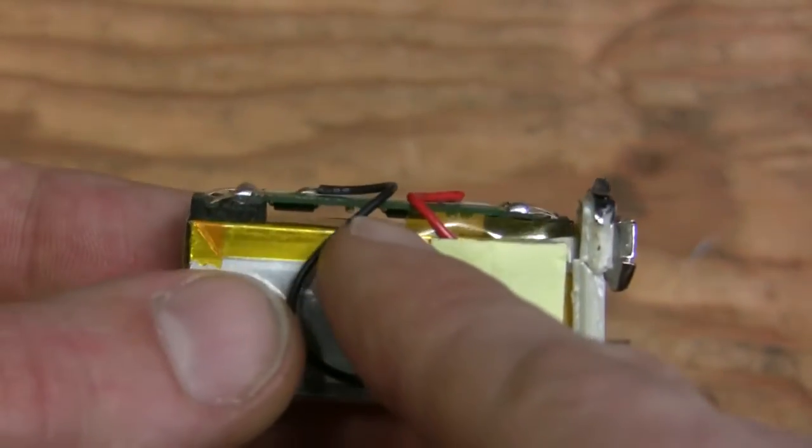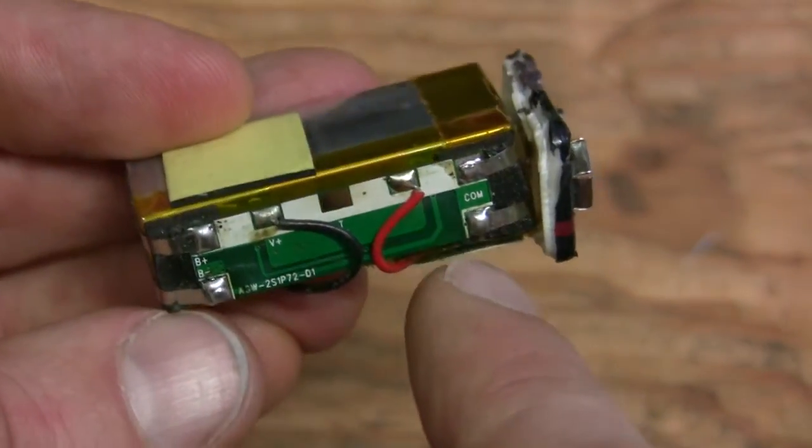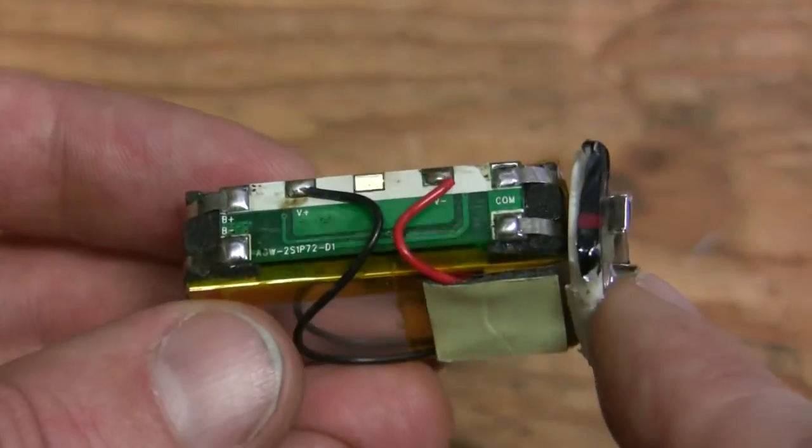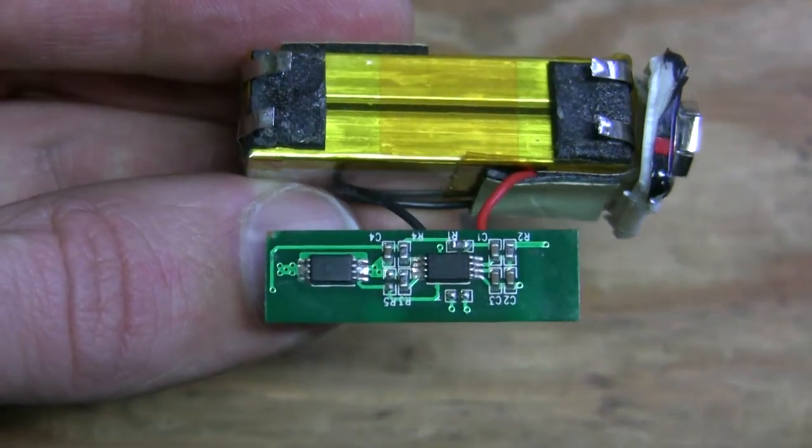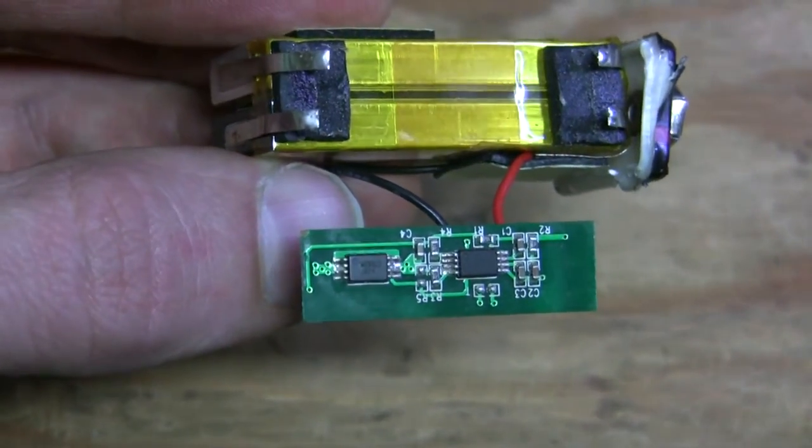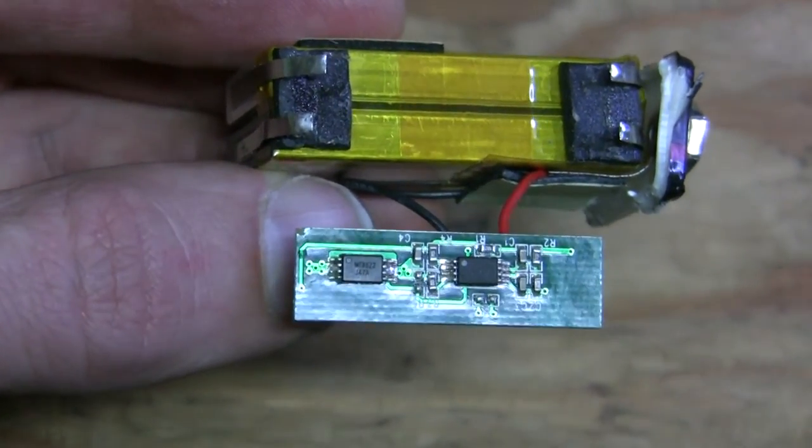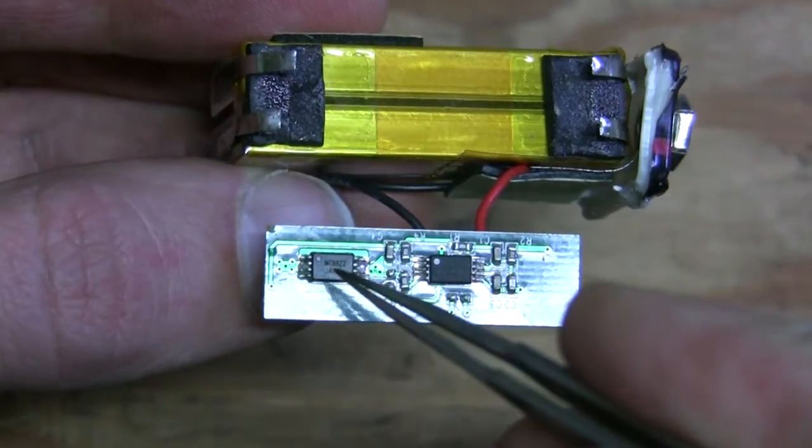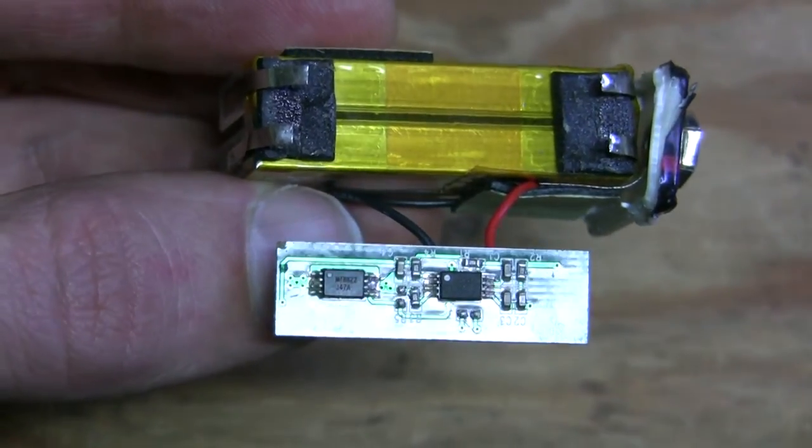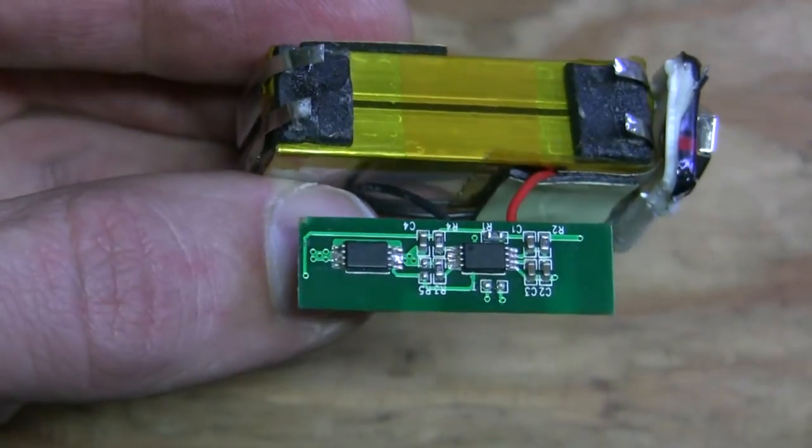Let's have a look. All the components are on the other side of the board. I need to desolder those four tabs to lift the board and have a look on the other side. Here is the other side of the board. There are two chips and a few passives around them. I think I see what the problem is. I'm not sure if it's visible on camera, but this chip seems to have a hole burnt in it.